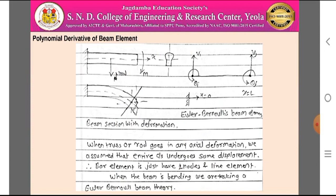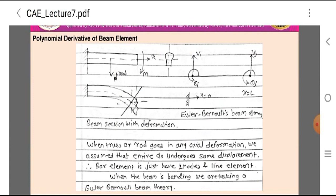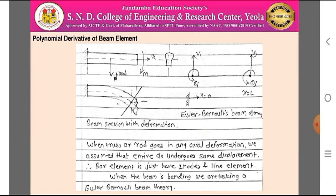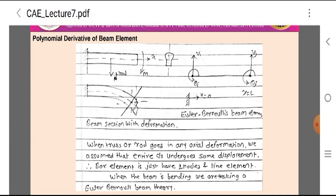The beam is allowed to displace in the direction of X. The left-side figure shows the beam section with deformation — because of loading, the beam is deformed and a change of cross-section occurs, shown at the middle edge. The deformed shape is shown below the beam. When the beam is loaded, in axial deformation — as with a truss or rod — we assume the entire cross-sectional area has the same displacement. A bar element has just two nodes as a line element.